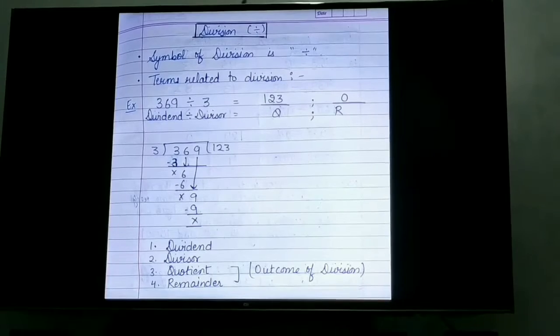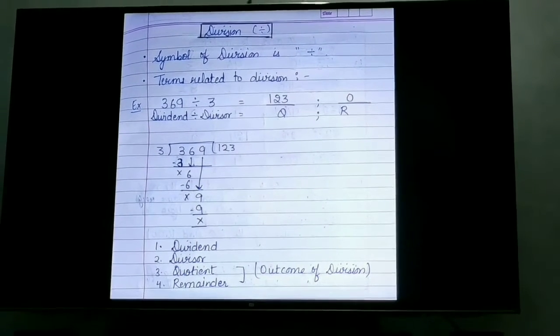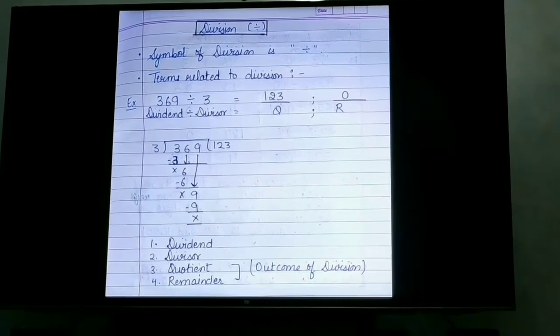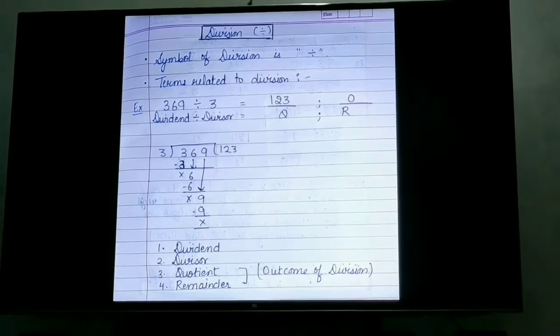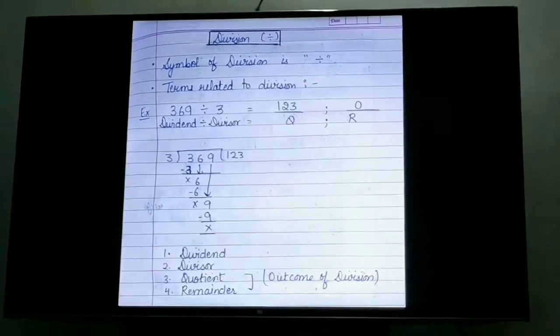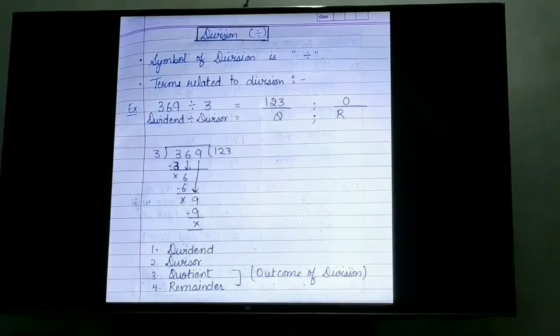So, in short, we can say, the terms related to division are: first, dividend, the number that will be divided; divisor, the number which will divide; quotient and remainder will be the outcomes of the division.